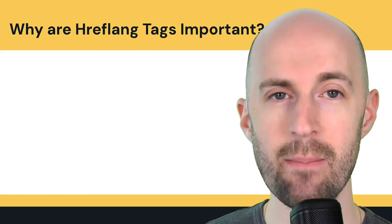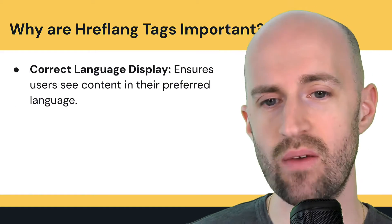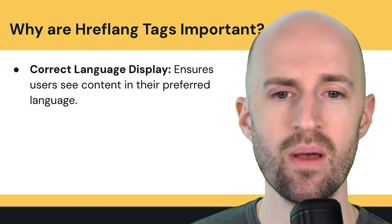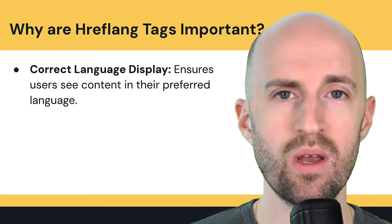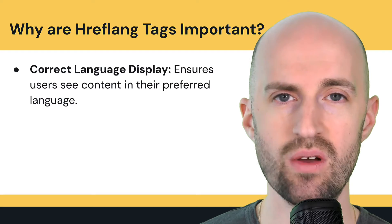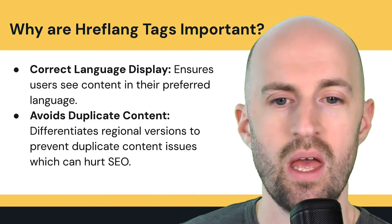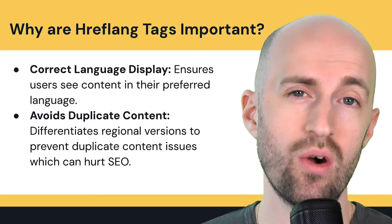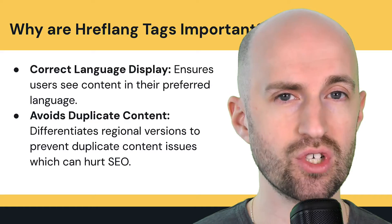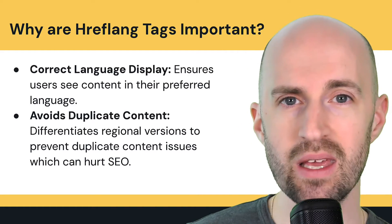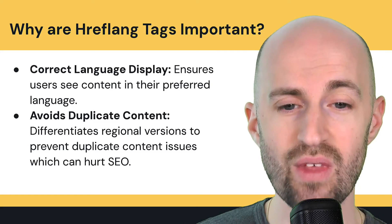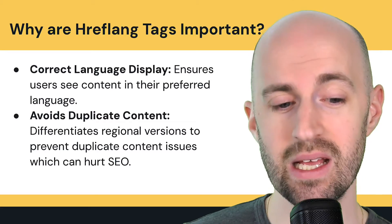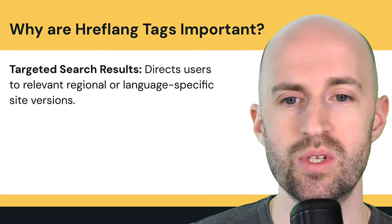So why are hreflang tags important? Firstly, it's about correctly displaying the language — it ensures that users in specific countries and areas see the content in their preferred language. For example, someone in France speaking French will land on the French version of the content. It also avoids duplicate content by differentiating regional versions, which can hurt your SEO. For instance, the English US and English UK versions might differ in spellings, cultural references, and prices. It also helps with targeted search results, directing users to the relevant regional or language-specific site version.